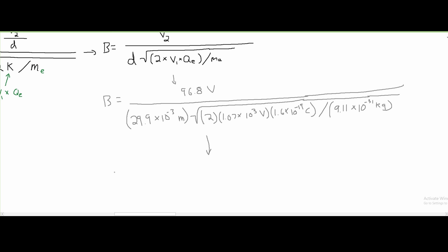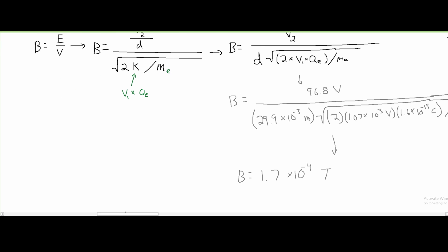...we're going to get the value of B equals 1.7 times 10 to the negative 4 Tesla. This is rounded, so it's an approximate.